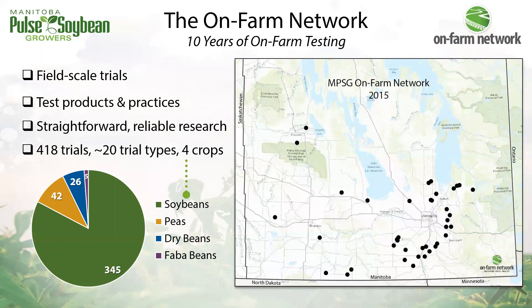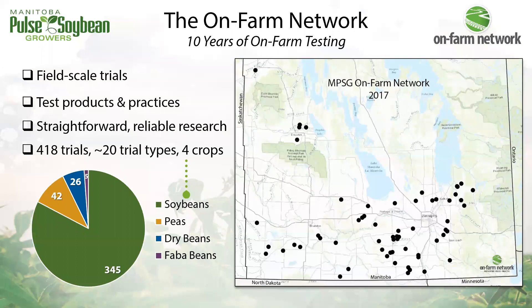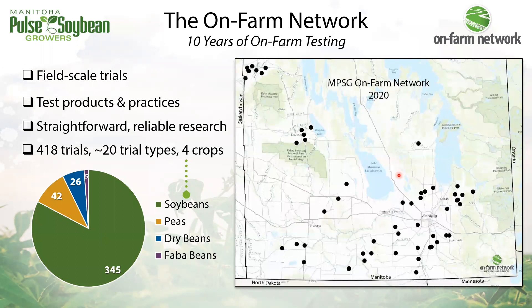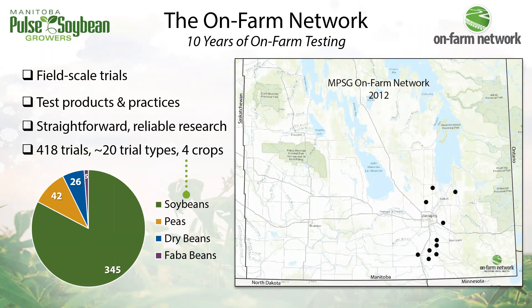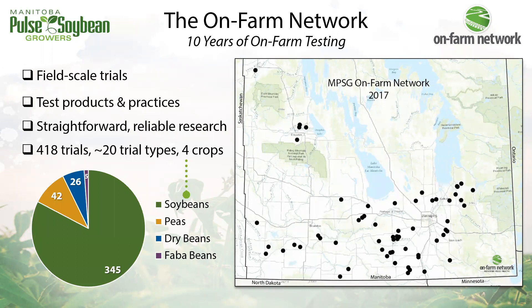MPSG has been running on-farm trials since 2012, and the on-farm network was officially created in 2014, so we've been at on-farm research for about 10 years now. The animated map shows yearly trial locations. The on-farm network is fully funded and directed by Manitoba Pulse and Soybean farmers — it really is a by-farmers, for-farmers research program, aiming to test new products and practices to empower farmers to conduct reliable research on their own farms.